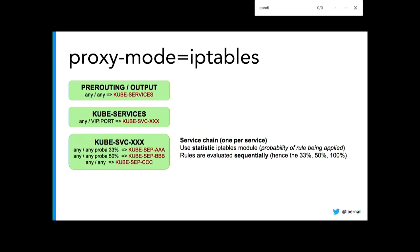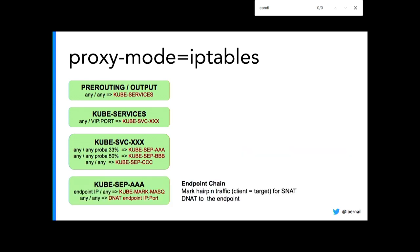In that service chain, you have one rule for each backend, and this is where things start to be a bit hacky. Kubeproxy uses the statistics IP tables module to randomly send traffic to backends. The way it works: there's a probability for each rule to apply. Instead of simply saying one-third, one-third, one-third for three backends, it's one-third probability for the first rule, then 50% for the second — because if the first rule didn't match, there are only two backends remaining. And finally, a chain for each endpoint just does the DNAT itself, modifying the destination IP to use the pod IP.